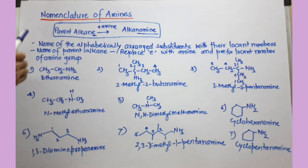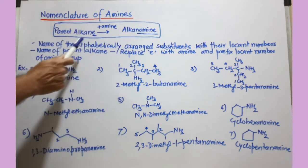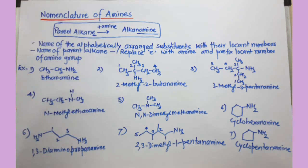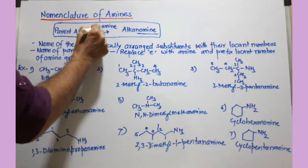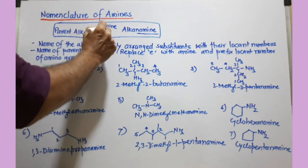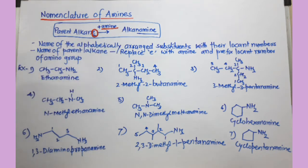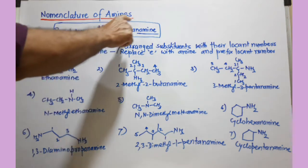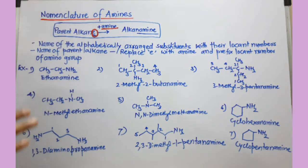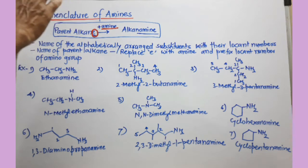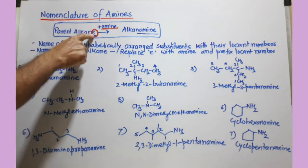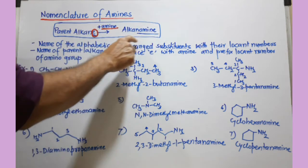Before we start, you have to find the name of the parent alkane from the selected chain of carbon, then replace the letter 'e' from the alkane and add 'amine' — so that becomes alkanamine. All the rules are very similar to other functional groups, but if an amino group is there, you just replace the 'e' of the parent alkane and add the word 'amine', so it becomes alkanamine.